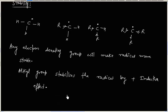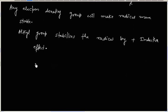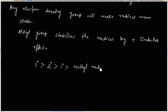So the stability order is: 3° radical is most stable, followed by 2° radical, then 1° radical, and finally methyl radical is least stable. This is the increasing order of stability.